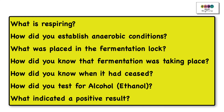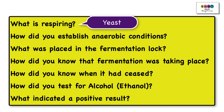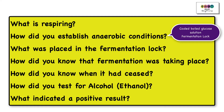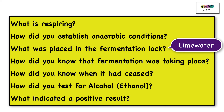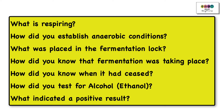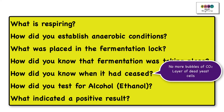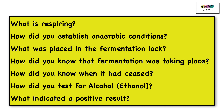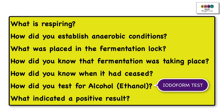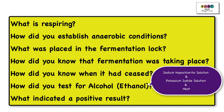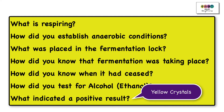Key exam questions: What is respiring? Yeast is respiring anaerobically. How did you establish anaerobic conditions? We boiled the glucose, cooled it to drive out oxygen and other gases, then added a fermentation lock. What was placed in the fermentation lock? Lime water — which turned milky in the test solution. How did you know fermentation was taking place? We could see the bubbles of CO₂. How did you know when it had ceased? No more bubbles were produced, and you may also see a layer of dead yeast because the alcohol poisons the yeast. How did you test for alcohol? We performed the iodoform test, adding sodium hypochlorite solution and potassium iodide solution, then heated — a positive result was the formation of yellow crystals.